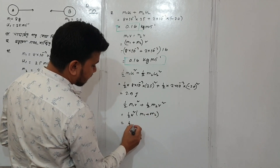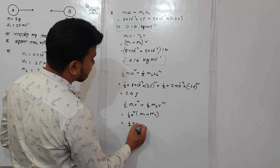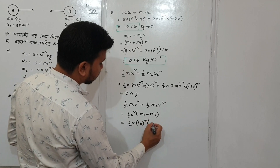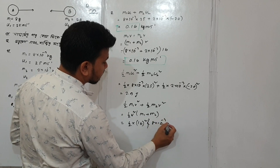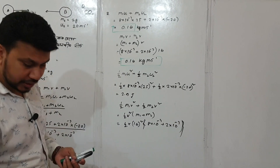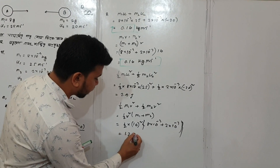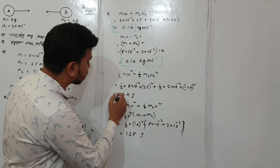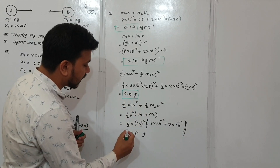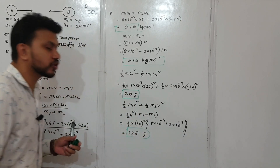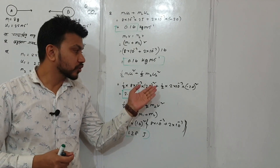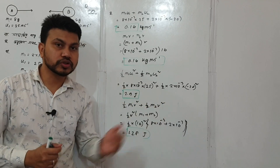1.28 joules — verifying conservation of energy. In the first case, kinetic energy is 2.9 joules; in the second case, kinetic energy is 2.8 joules — or 1.28 joules. This is used to confirm or deny conservation of kinetic energy using the formula.